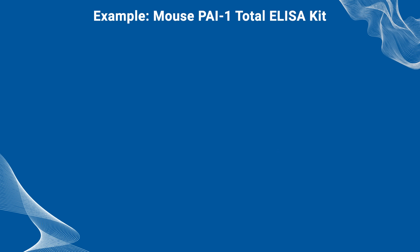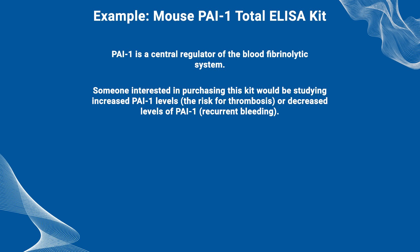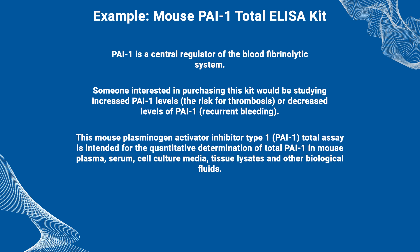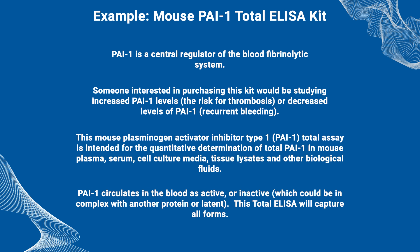Here's an example: the mouse PAI-1 total ELISA kit. PAI-1 is a central regulator of the blood fibrinolytic system. Someone interested in this kit would be studying increased PAI-1 levels and the risk for thrombosis, or decreased levels of PAI-1 in recurrent bleeding. This mouse plasminogen activator inhibitor type 1 (PAI-1) total assay is intended for the quantitative determination of total PAI-1 in mouse plasma, serum, cell culture media, tissue lysates, and other biological fluids. PAI-1 circulates in the blood as active or inactive — which could be in complex with another protein or latent — and this total ELISA kit will capture all forms.